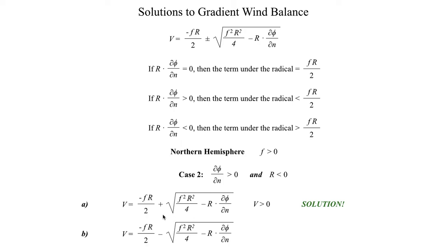Now let's take a look at the minus solution. R is negative, so we get a relatively small positive number minus a big positive number. Small positive number minus big positive number gives us a negative value for V, so unfortunately that is not a valid solution to the gradient wind balance. That's just following the logic established from the end of the previous segment.